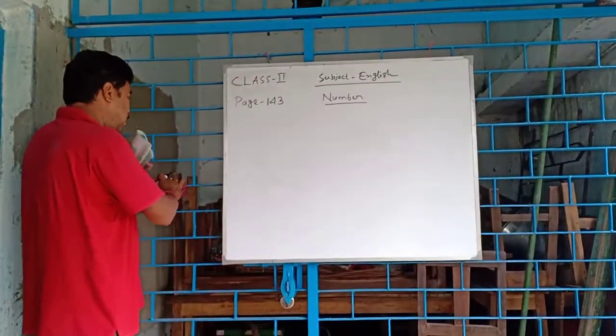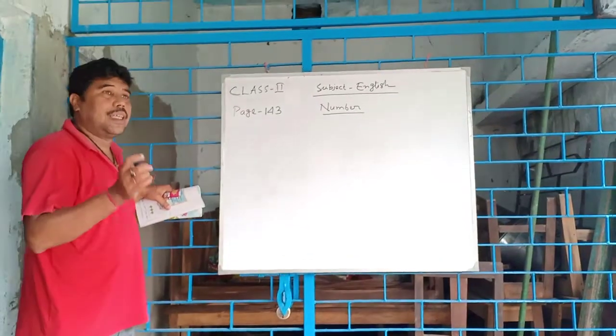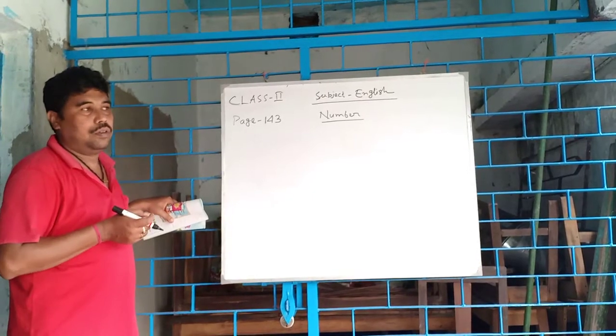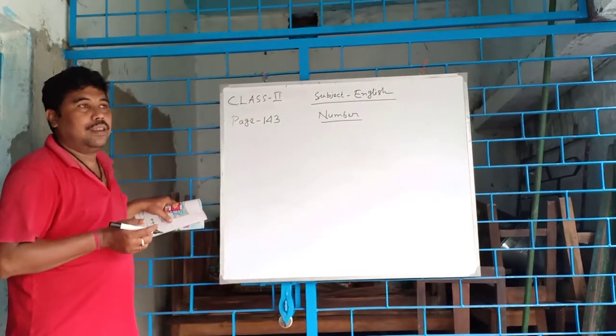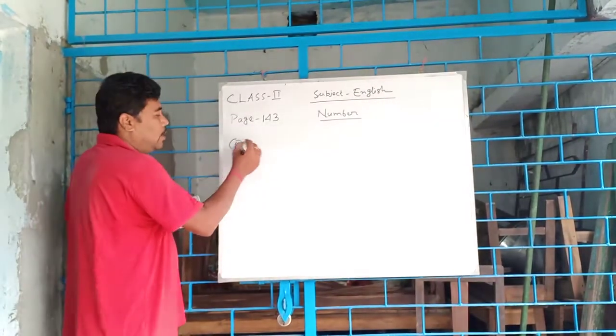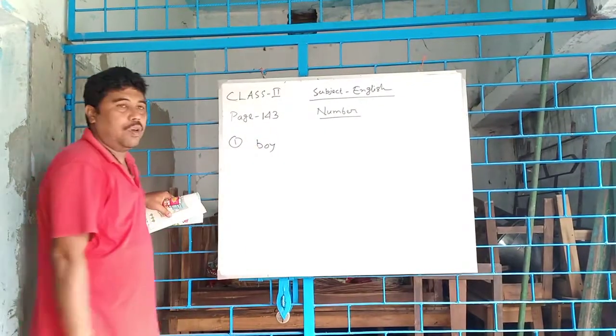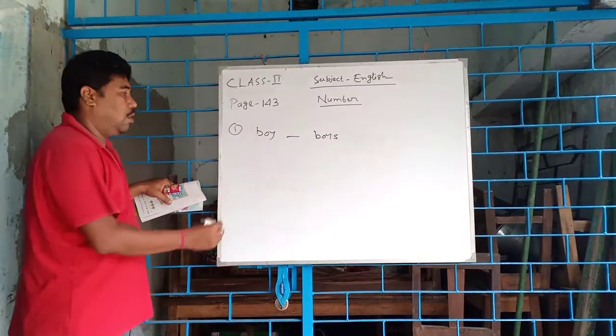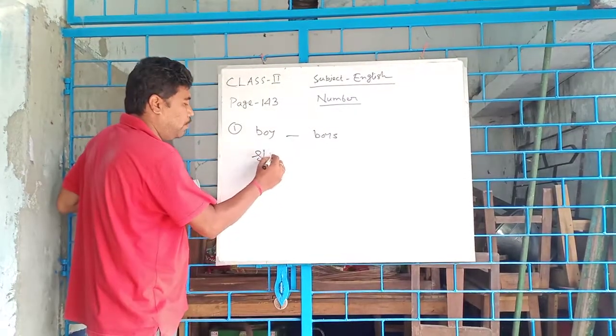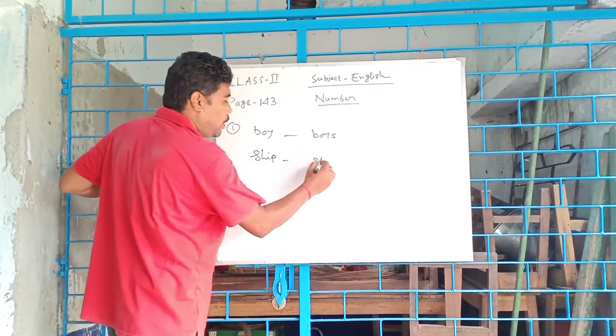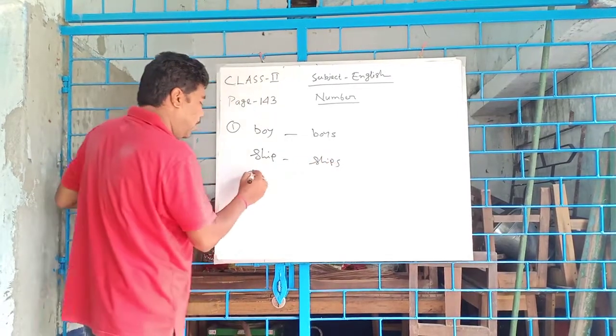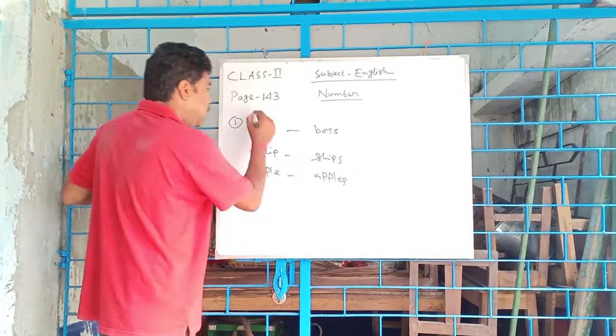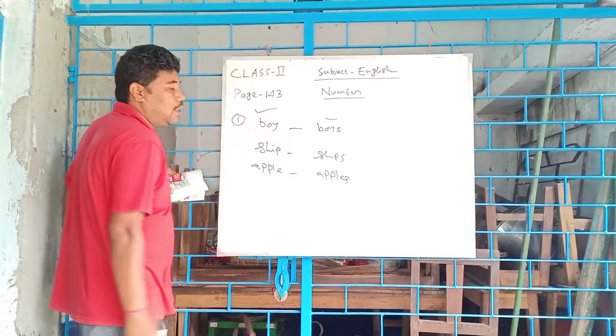The first rule is generally S and ES are added to the nouns to make it plural. Such as boy means singular, boys. Or ship, ships. Apple, apples. This is singular. This is plural.